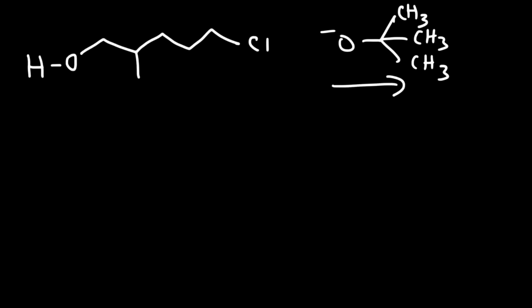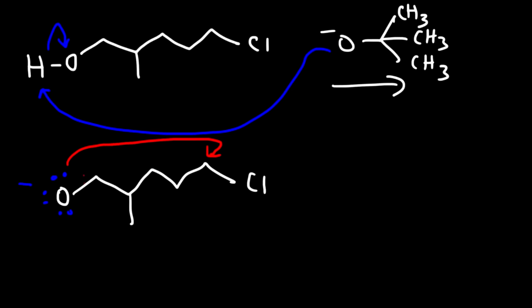So by making the base more sterically hindered, you can increase its specificity. You can make it behave more as a base, less of a nucleophile. So we're going to focus on this reaction where it takes off the hydrogen. However, we can increase the yield of this reaction by making this base more sterically hindered. There are other bases out there that are so sterically hindered that they don't act as nucleophiles. Now once we take off this hydrogen and we get the alkoxide ion, this oxygen is going to attack itself. Not itself, but the molecule attacks itself. So you're going to have an intramolecular reaction.